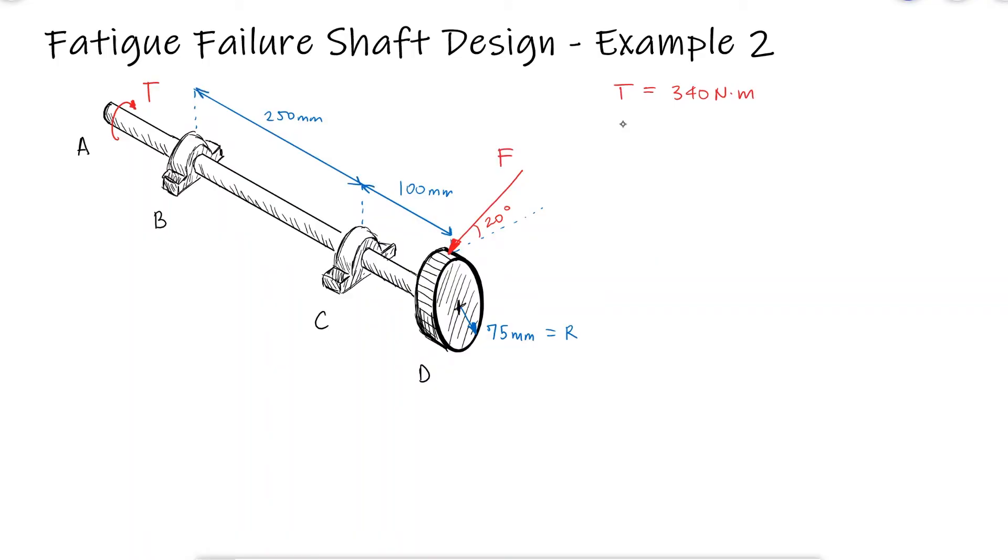If the shaft has an ultimate strength of 560 megapascals, a fully corrected endurance limit of 183 megapascals, and we're assuming conservative values for the fatigue stress concentration factors Kf and Kfs of 2.4 and 2.1 respectively, what should the diameter of the 250 millimeter section be if we're using the DE Goodman criterion and the design factor of 2.5?